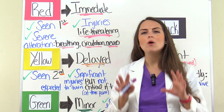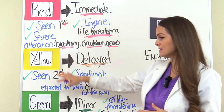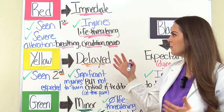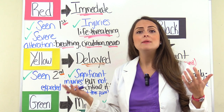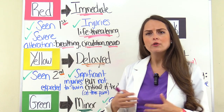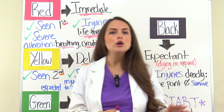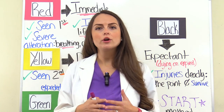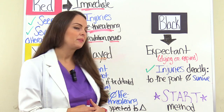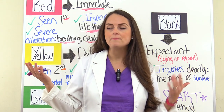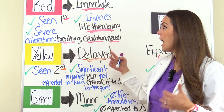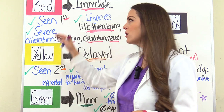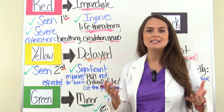For exams, what you want to know is what each color is, what it represents, specifically the types of injuries, and who has the highest priority of being seen first or second, who can sometimes take care of themselves, and who's not going to survive. In the next video, we'll go over the START method used to help determine which tag color the patient falls into, but for this video we'll concentrate just on the color-coded TAG system.